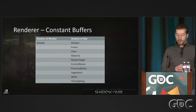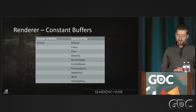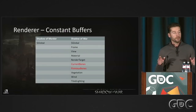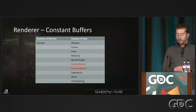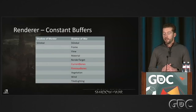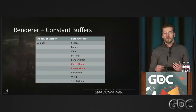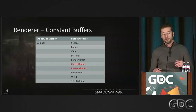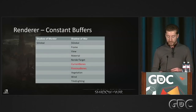Looking at our named constant buffers for Shadow of War, I want to highlight the bone constant buffers. We now also have a 'previous bones' constant buffer because Shadow of War introduced temporal anti-aliasing, which requires previous-frame bone data to generate motion vectors. So now we're sending not just current-frame bones but also previous-frame bones every single frame.